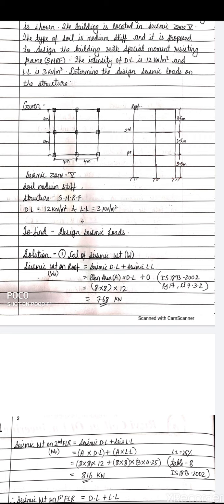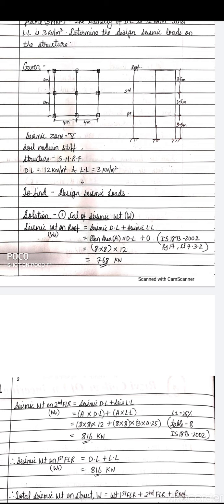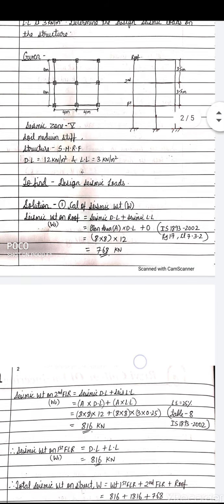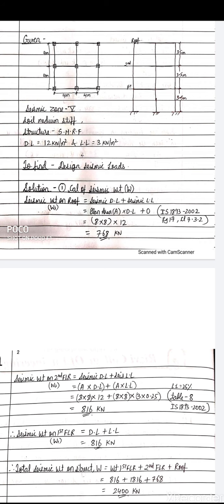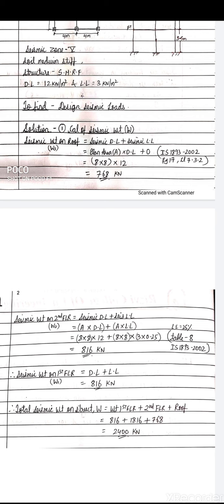As per IS 1893 Clause 7.3.2, Page 17, the imposed load on the roof need not be considered for calculating design seismic forces. Hence we have not considered the live load on the roof. Therefore, the seismic weight on the roof comes out to be 768 kN.